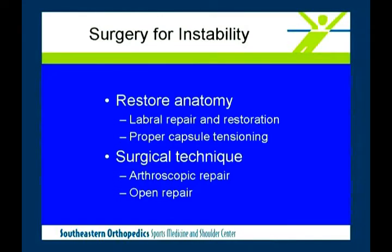Surgery for instability is conceptually simple: you take what is torn or damaged and restore it to how it was before. If the labrum is torn off the bone, you put it back to the bone. If the ligament is plastically deformed — instead of being 3.5 centimeters long it's 4 centimeters long — then you've got to put a tuck in it and tighten it up.